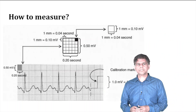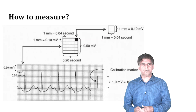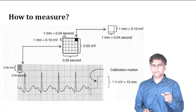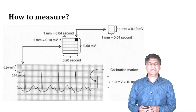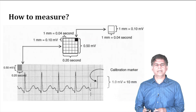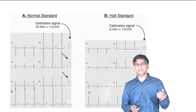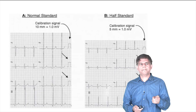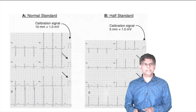To measure voltage, use the small boxes — each small box is about 0.5 millivolts, so two boxes equals 1 millivolt, which equals 10 millimeters. The normal standard calibration signal is visible on the right side for comparison. A half-standard calibration is also shown on the right side.